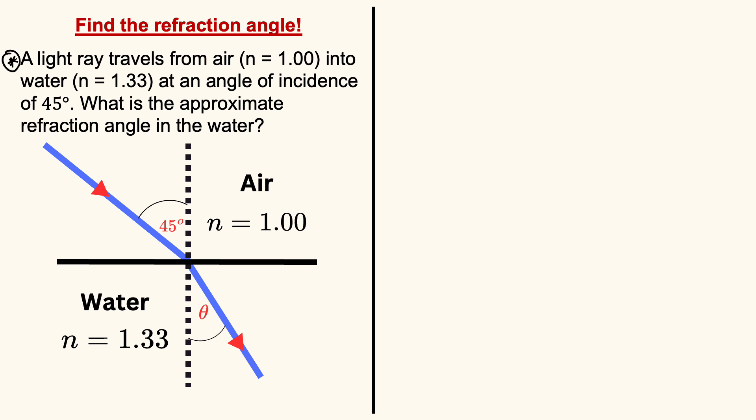A light ray travels from air with refractive index of 1.00 into water with refractive index of 1.33 at an angle of incidence of 45 degrees. What is the approximate refraction angle in water?